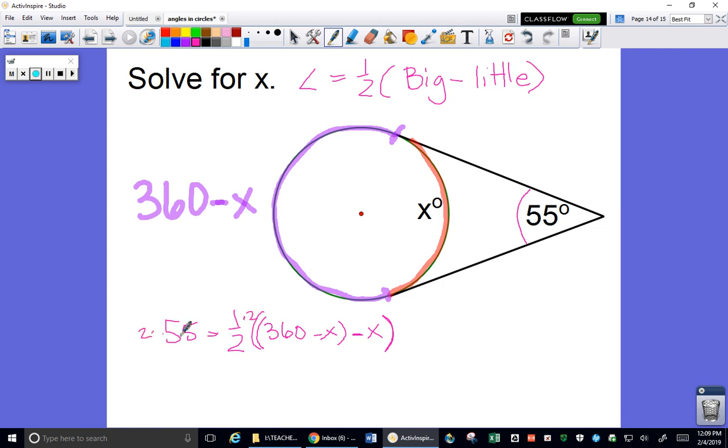Multiply both sides by 2. 110 equals 360 minus 2x's. Minus x and minus x minus 2x.